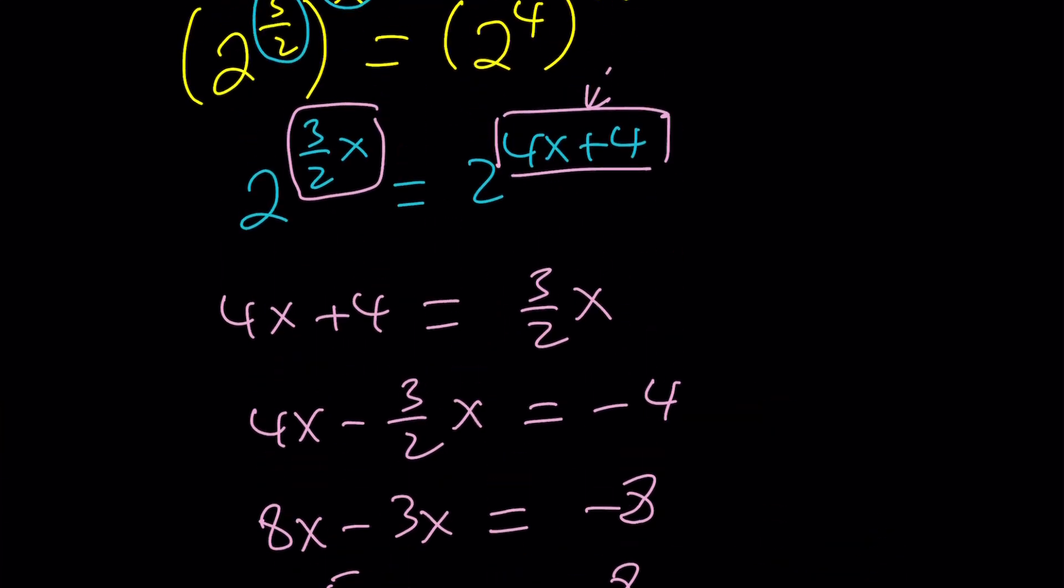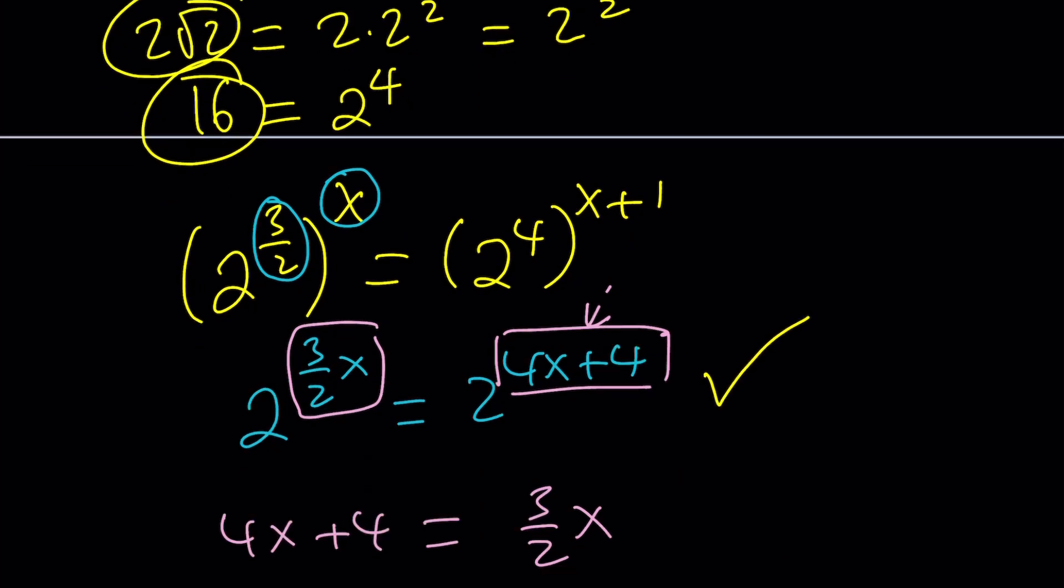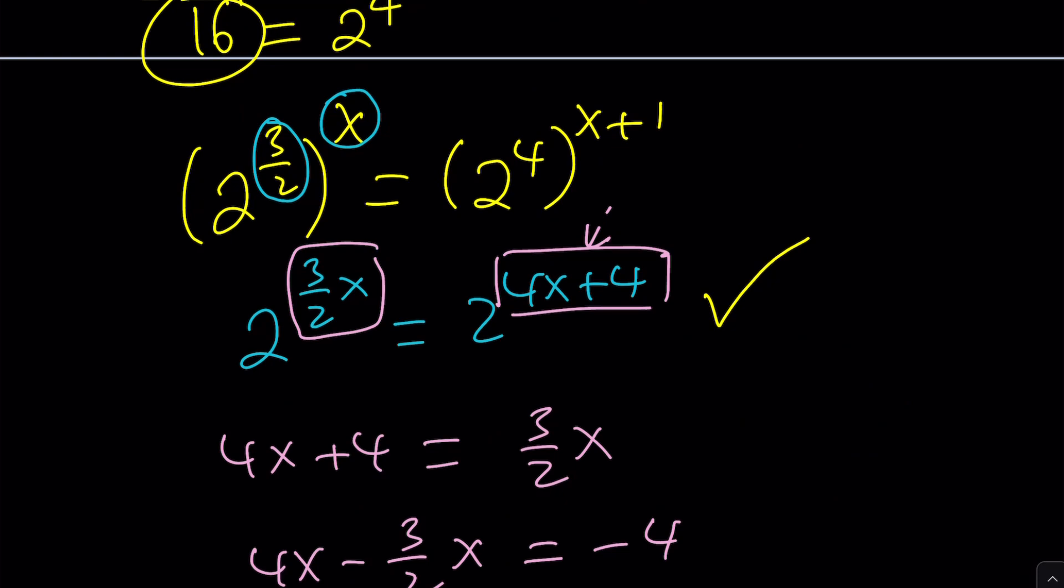But here's the important question. Are there any complex solutions, and how do we find them if there is any? So let's go ahead and pick it up from here. I'm going to go ahead and switch these. So that gives me 2 to the power of 4x plus 4 is equal to 2 to the power 3 halves of x.